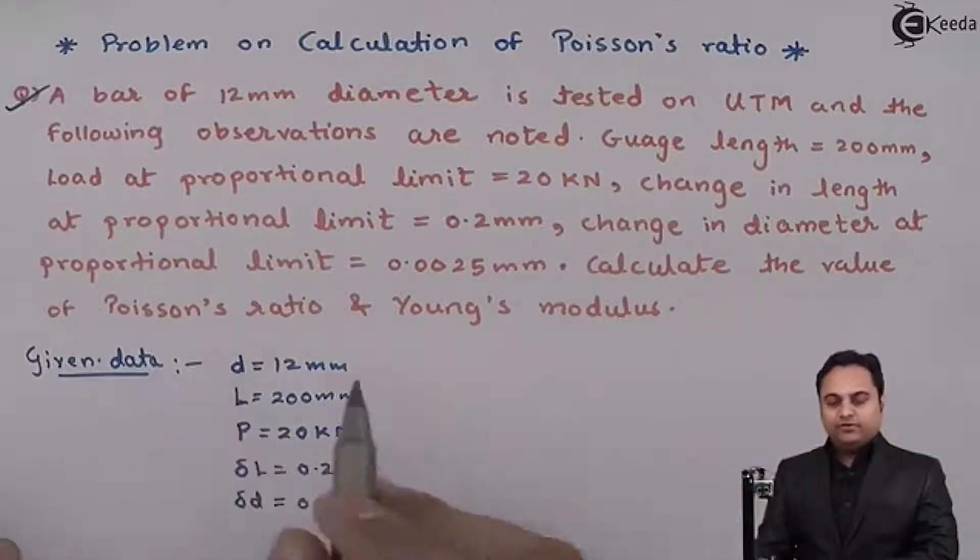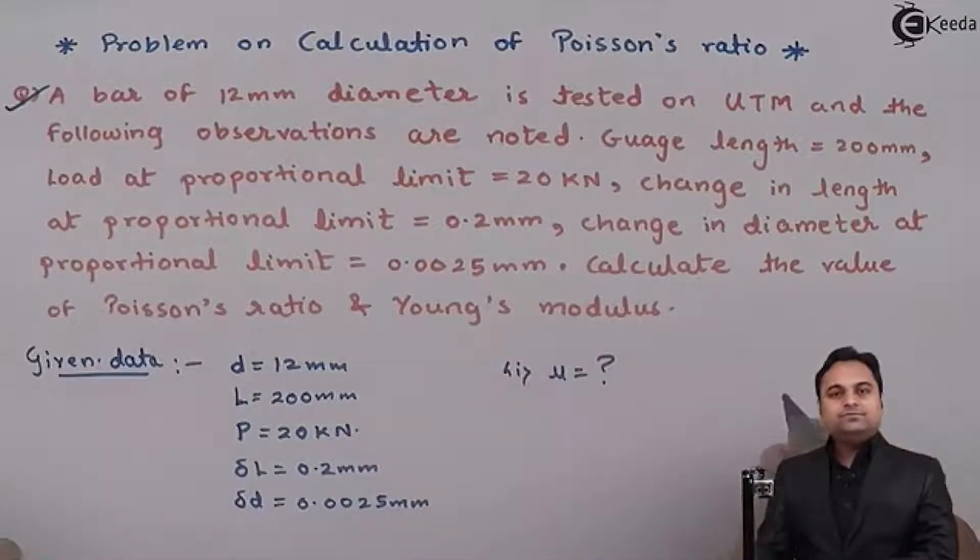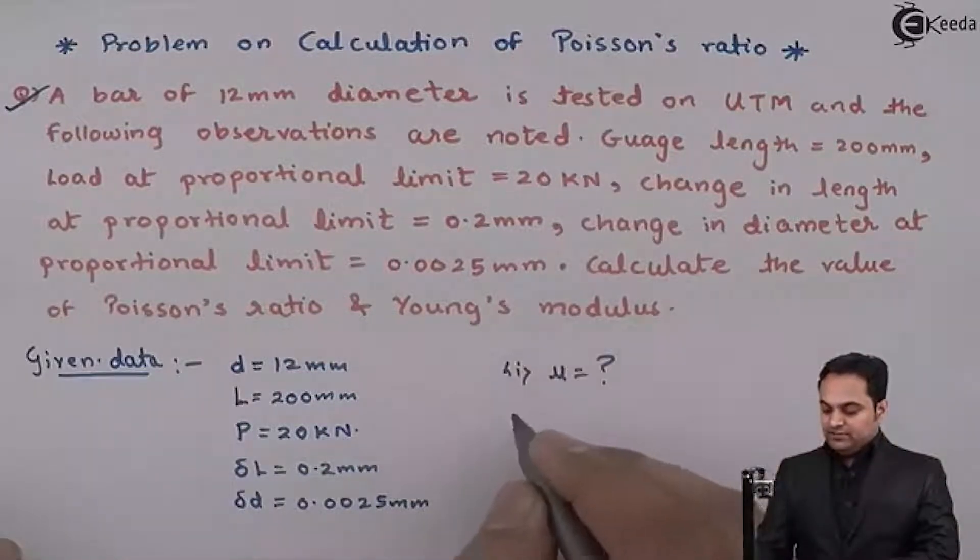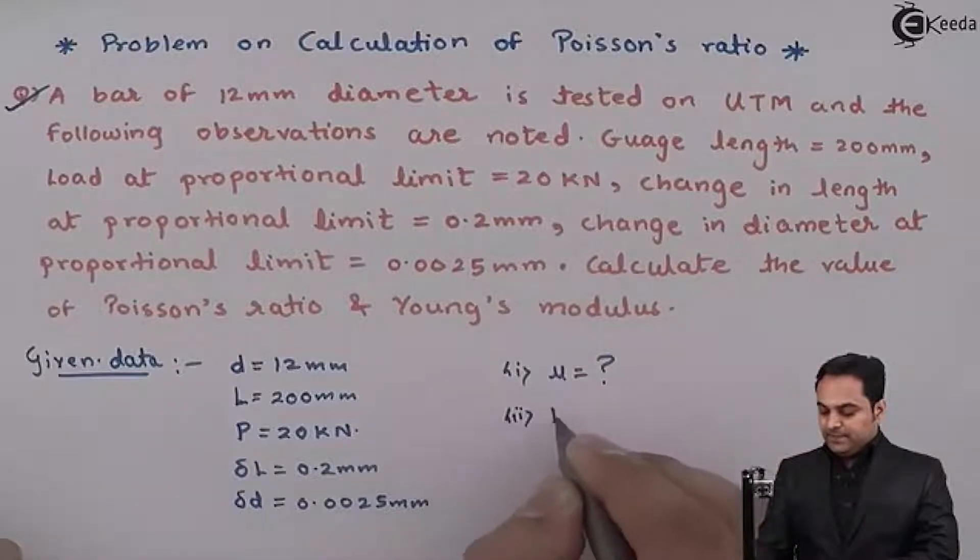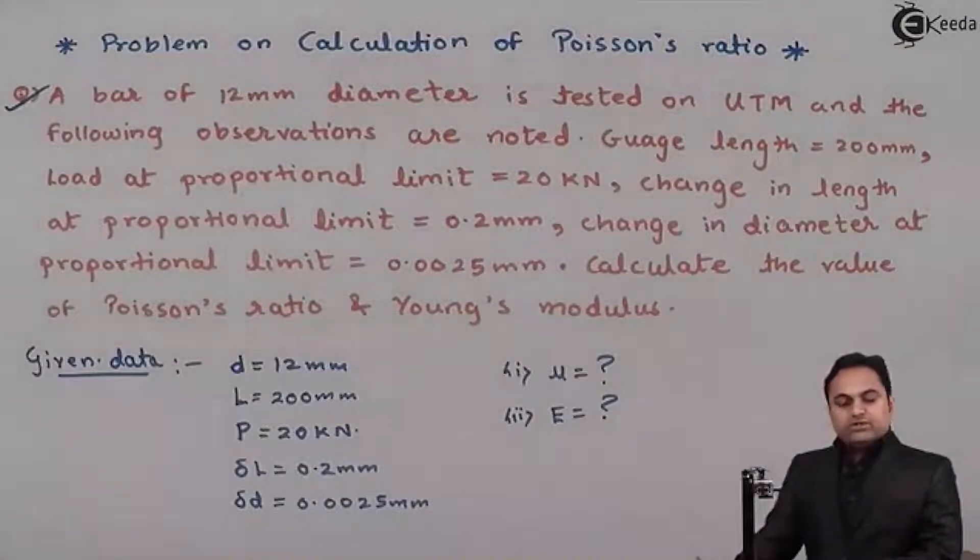Calculate the value of Poisson's ratio, denoted by mu, and Young's modulus, denoted by E. So this is the question we have.